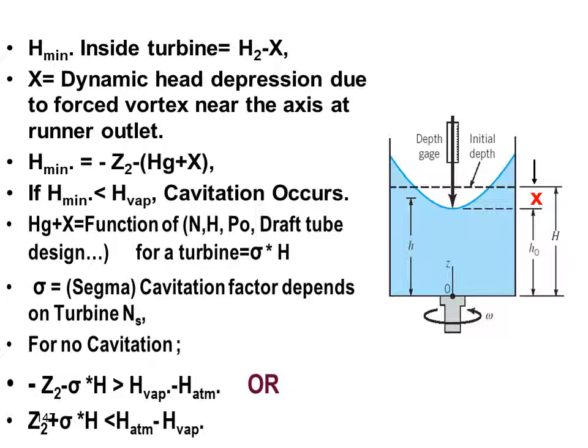As we see, hg plus x equals sigma multiplied by H, where sigma is called the cavitation factor. Sigma is only a function of the specific speed of the turbine, and H is the overall head of the turbine, which represents the difference between the upstream and downstream water levels.